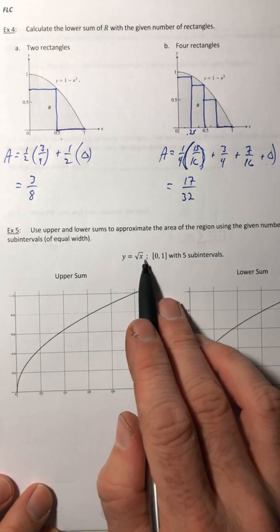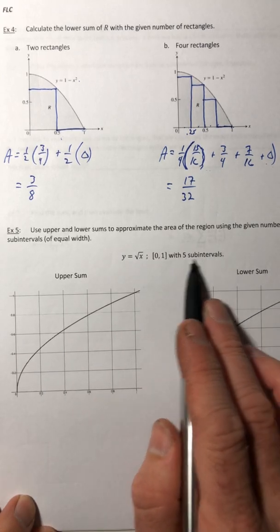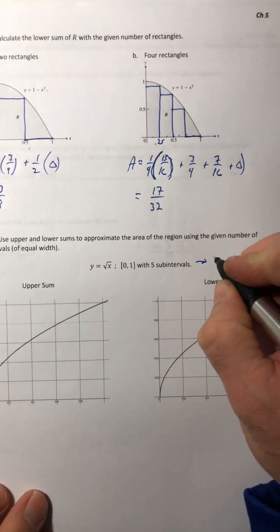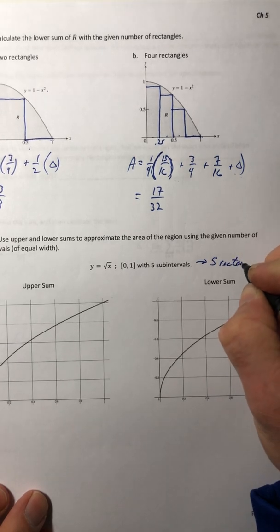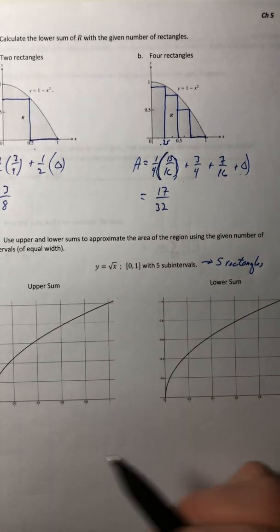So we're gonna do y equals root x with five sub intervals. So when it says five sub intervals, they're talking about five rectangles and they have to tell you how many rectangles to use otherwise you have no idea.